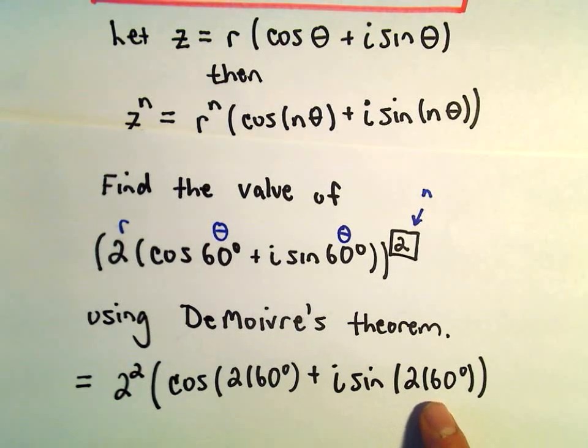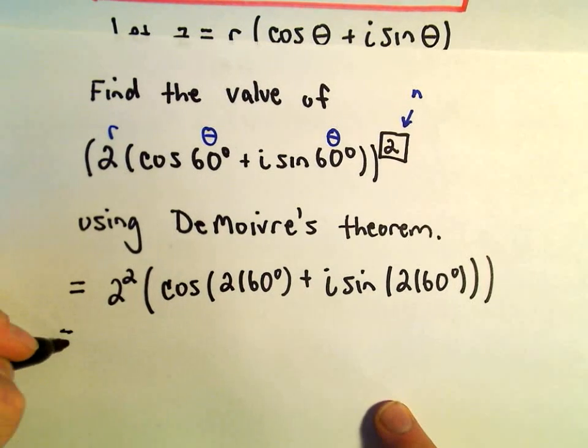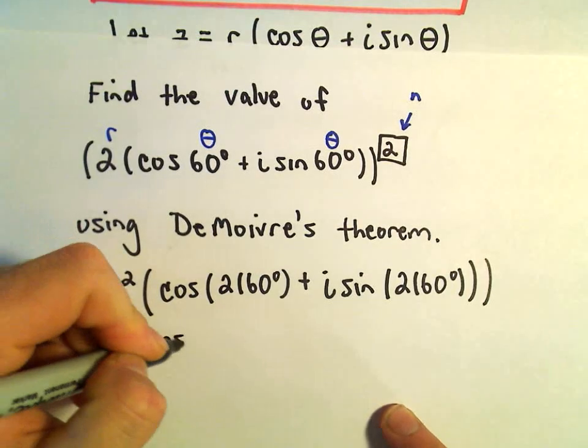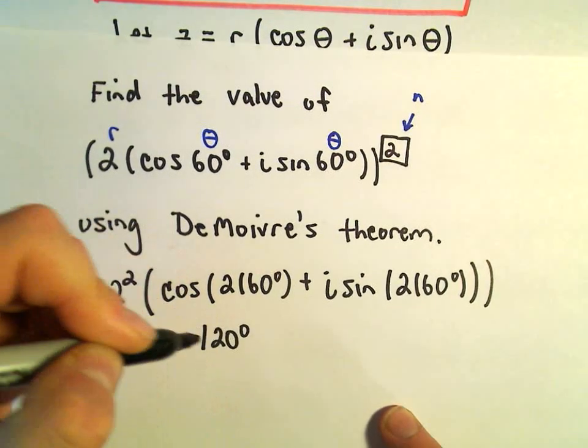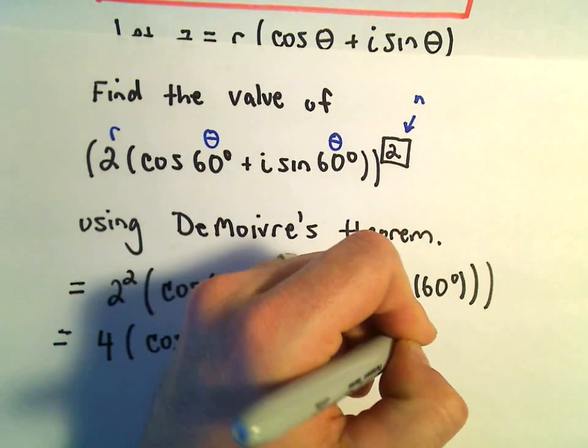We have enough parentheses here. I think one more. And now you can always clean it up a little bit. So 2 squared is 4. This will be cosine of 120 degrees, plus i sine of 120 degrees.